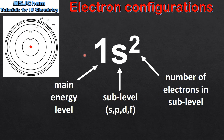Let's start by looking at how electron configurations are written. The number in front refers to the main energy level, so that's N equals 1 or N equals 2 and so on. The letter refers to the sublevel, so that's S, P, D or F. And the number in superscript tells us the number of electrons in the sublevel. So according to this electron configuration, we have two electrons in the S sublevel in the first main energy level.